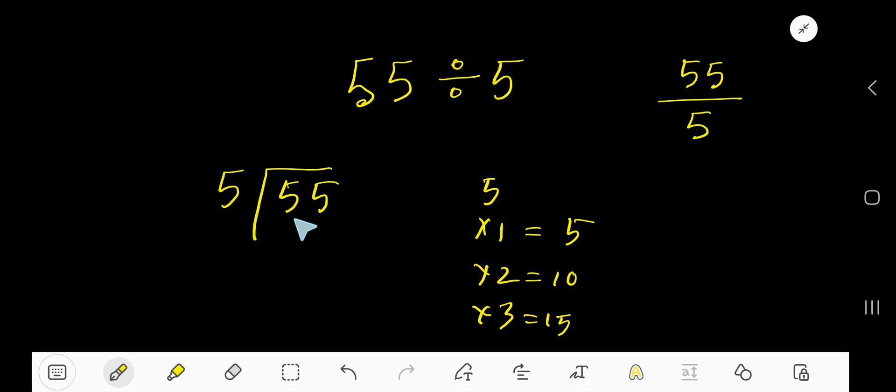Okay. 5 goes into 5. We can stop here. 1 time. 1 times 5 is 5. If you subtract, you get 0.